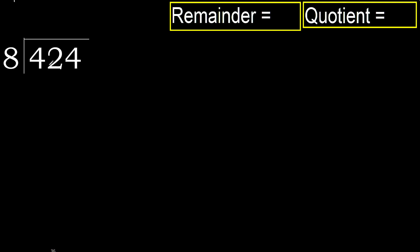424 divided by 8. 4 is less than 8, therefore we move to the next digit. 42 is not less, so we work with 42.